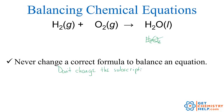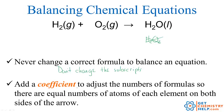Instead, what we do is we add a coefficient to adjust the numbers of the formulas until we get equal numbers of atoms of each element on both sides. So a coefficient is a number I write in front of the formula. So if I put a number out front, that multiplies the entire formula by that number. So if I have two oxygens on the left and I want to make this two oxygens on the right, well I only have one — I need to multiply this by two. So instead of just putting a two down here, I'm going to multiply the whole thing by two. So this is the coefficient that I put out front.